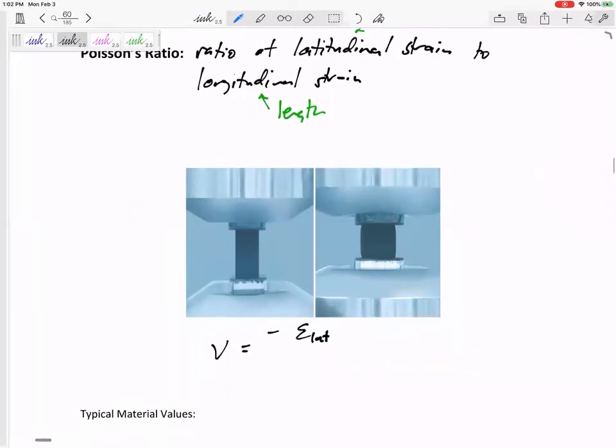Latitudinal strain over longitudinal strain. What do you think latitudinal strain is? Change in diameter over diameter. And longitudinal is change in length over length.